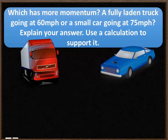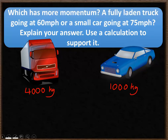Let's go through the answer. I'll estimate the truck's mass at 4,000 kilograms and the car's mass at 1,000 kilograms — slightly different estimates are fine. The truck's speed is 60 miles per hour and the car's is 75 miles per hour. The truck's momentum is 4,000 times 60, which equals 240,000 kilogram miles per hour.